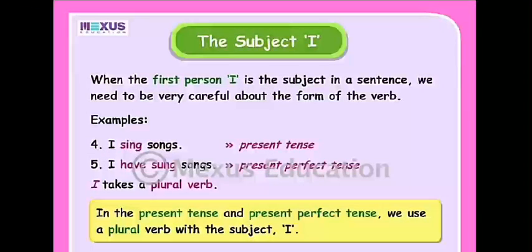Now, when the first person 'I' is the subject in a sentence, we need to be very careful about the form of the verb. 'I sing songs' — present tense. 'I have sung songs' — present perfect tense. 'I' takes a plural verb. 'I' is singular in number, but it takes a plural verb. We never write 'I goes' — that is wrong. In the present tense and present perfect tense, we use a plural verb with the subject 'I.'